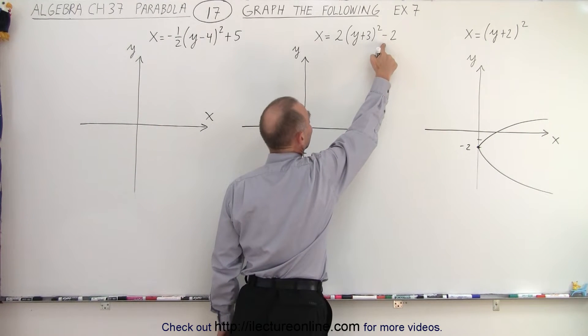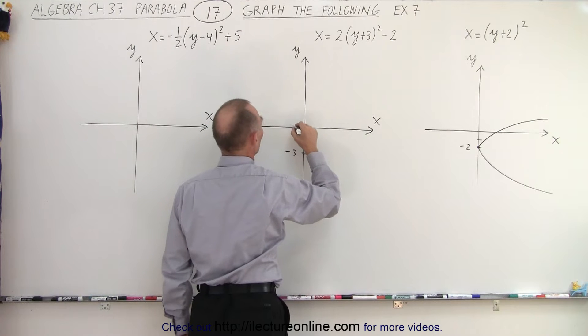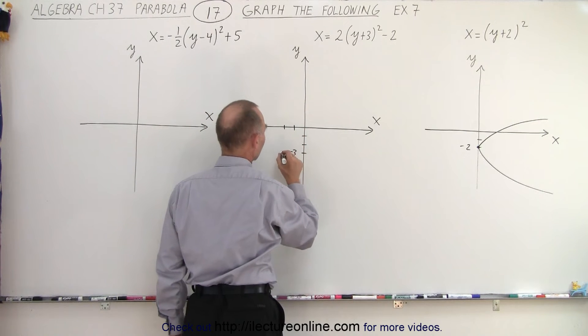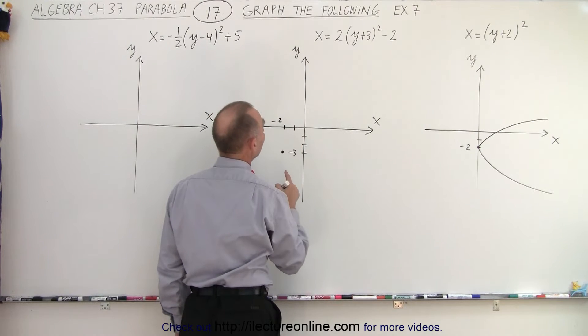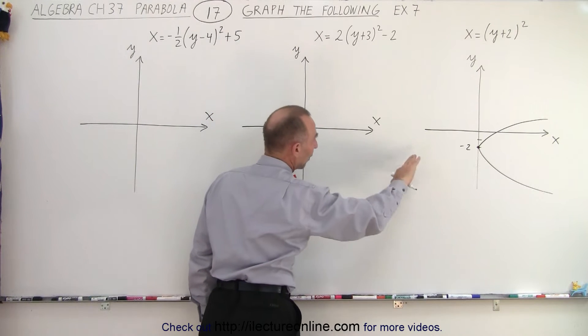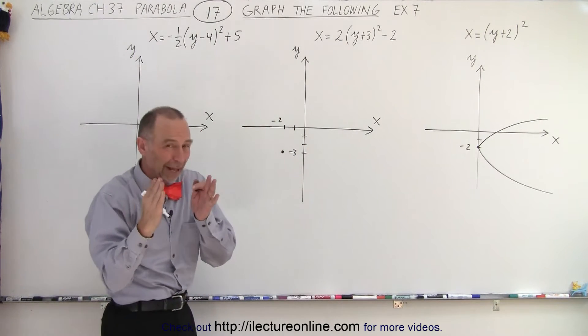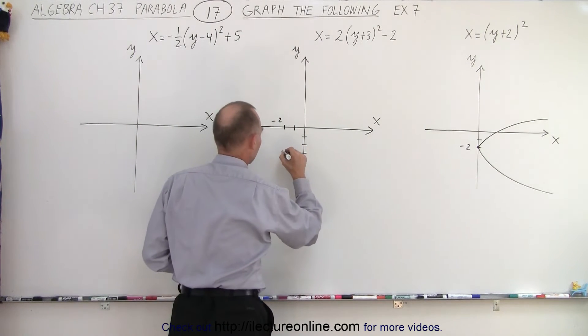And we have a shift in the negative direction along the x-axis, 1, 2, right there. So the vertex is right there, so this is negative 2. And it opens towards the right, towards the positive direction. But since we have a 2 there, that means it's going to be a rather skinny parabola.